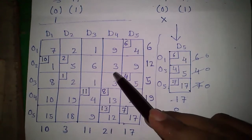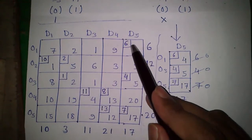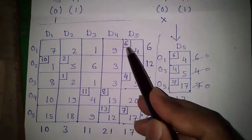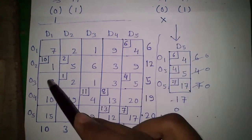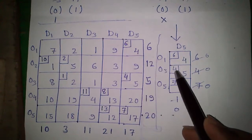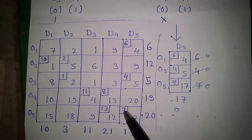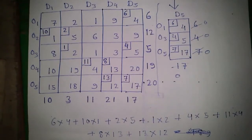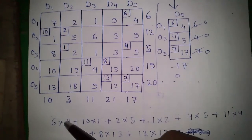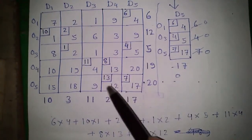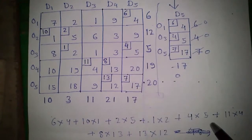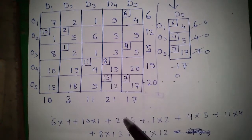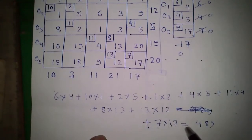Next, we draw our final allocation table. It is nothing but the original table, and we put our individual allocations into it. We have 6 at the O1–D5 position, 4 at the O3–D5 position, and 7 at the O5–D5 position. Find all individual allocations for each step and write them into the final table. The total allocation cost is: 6×4 + 10×1 + 2×5 + 1×2 + 4×5 + 11×4 + 8×13 + 13×12 + 7×17 = 489. This is our required answer.